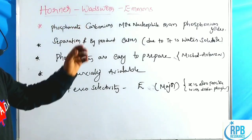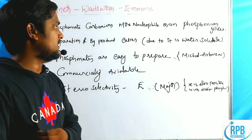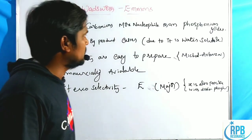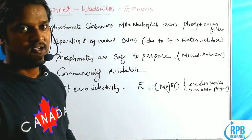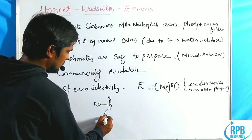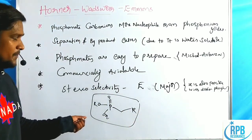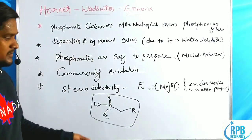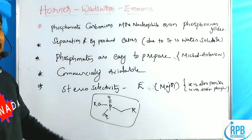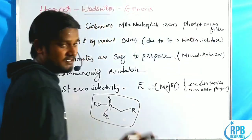To overcome these drawbacks, they introduced the Horner-Wadsworth-Emmons reaction. The main modification is that phosphonate carbanions are more nucleophilic than phosphonium ylides. They use phosphonate esters with P=O, OR, OR groups — these are phosphonium phosphonates used in the HWE reaction. This is more basic than phosphorus ylides — that is the first advantage.